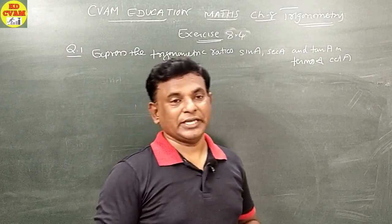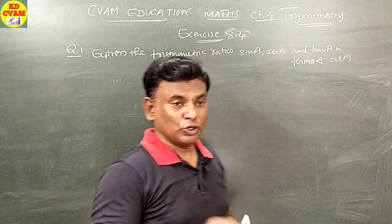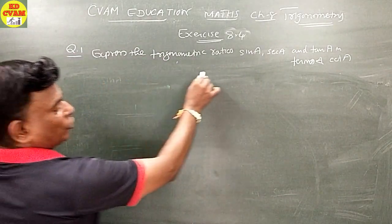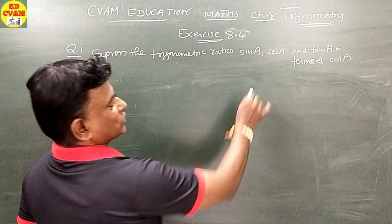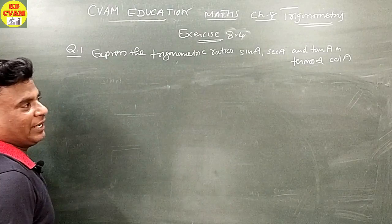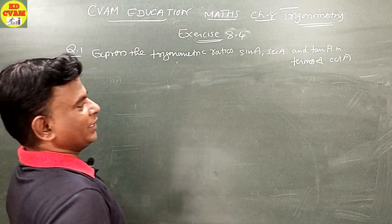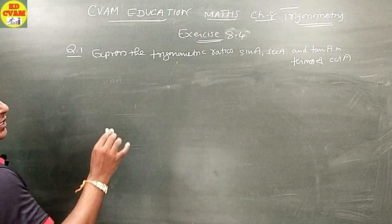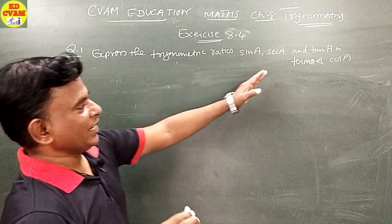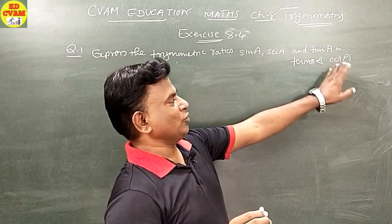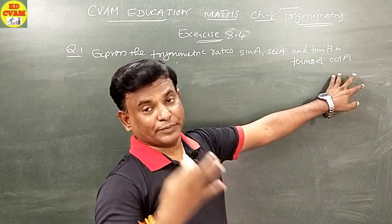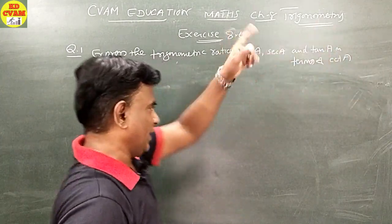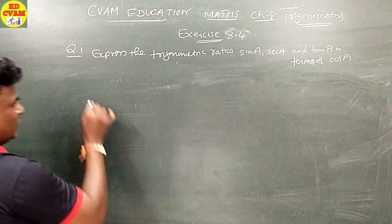Exercise 8.4, Question number 1: Express the trigonometric ratios sine A, sec A and tan A in terms of cot A. We need to show everything in terms of cot A. Let us start.